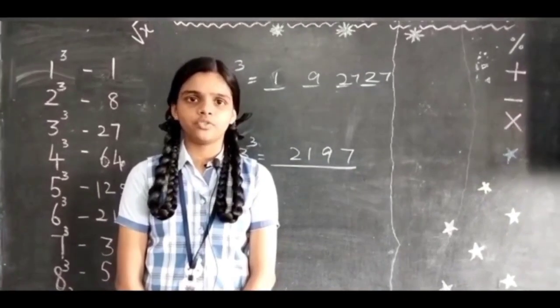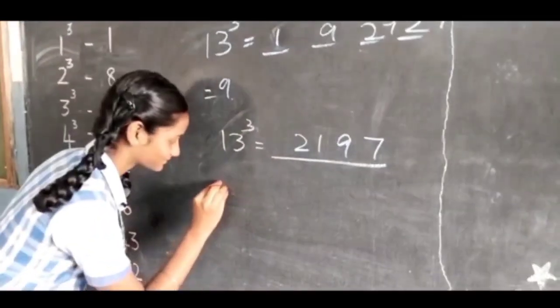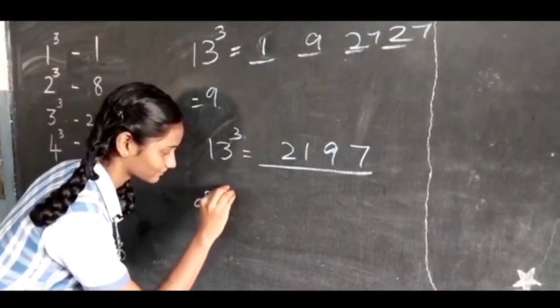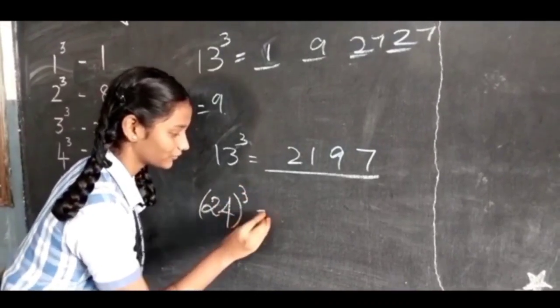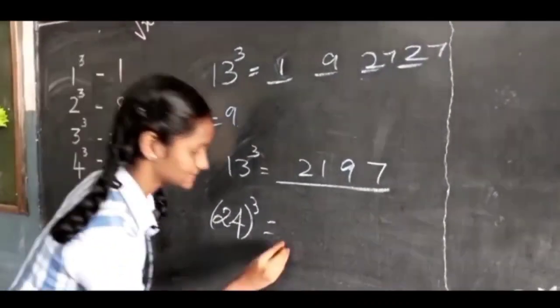One of you can come and explain for 24. To find the cube of 24, we must divide into 4 parts.